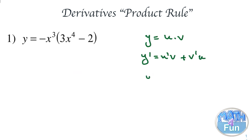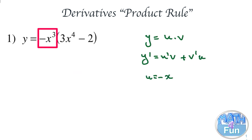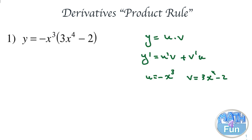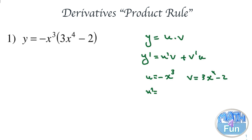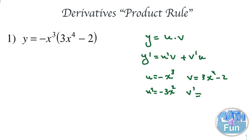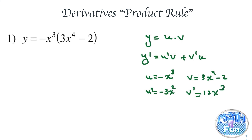Let's consider u equal to minus x to the power 3 and v equals to 3x to the power 4 minus 2. We find u prime and v prime. u prime is the derivative of minus x cubed, which gives minus 3x squared. And v prime: drop down the 4, multiply by 3 to get 12x to the power 3. The derivative of minus 2 is 0.